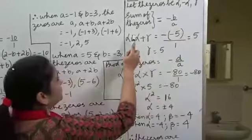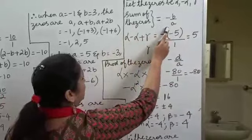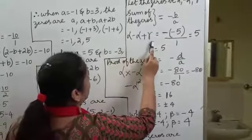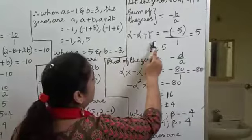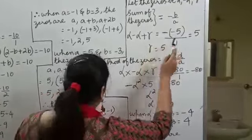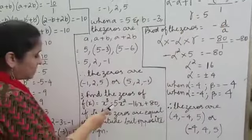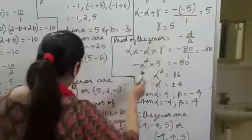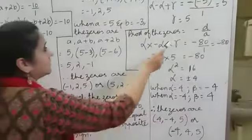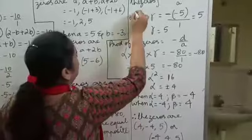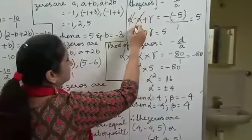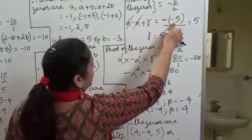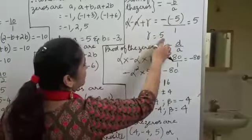The sum of the zeros is minus B by A. The zeros are alpha, minus alpha and gamma, so their sum equals minus B by A. B is minus 5 and A is 1, giving minus (minus 5) by 1 which equals 5. Alpha and minus alpha cancel, so gamma is equal to 5.